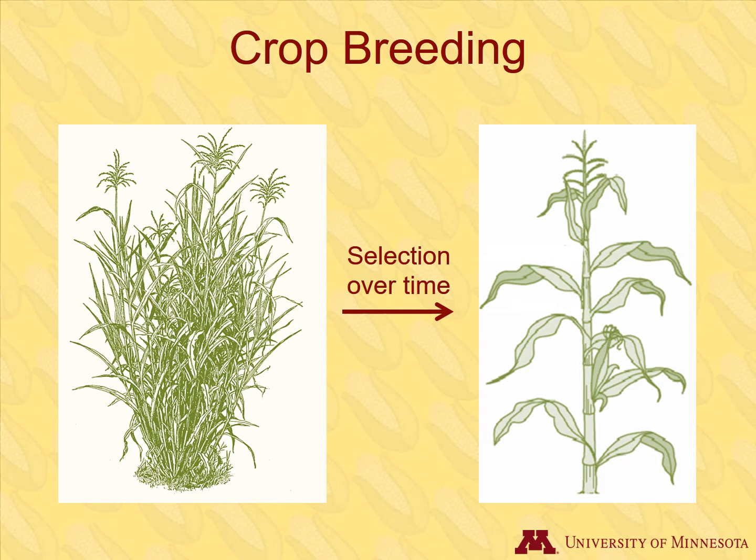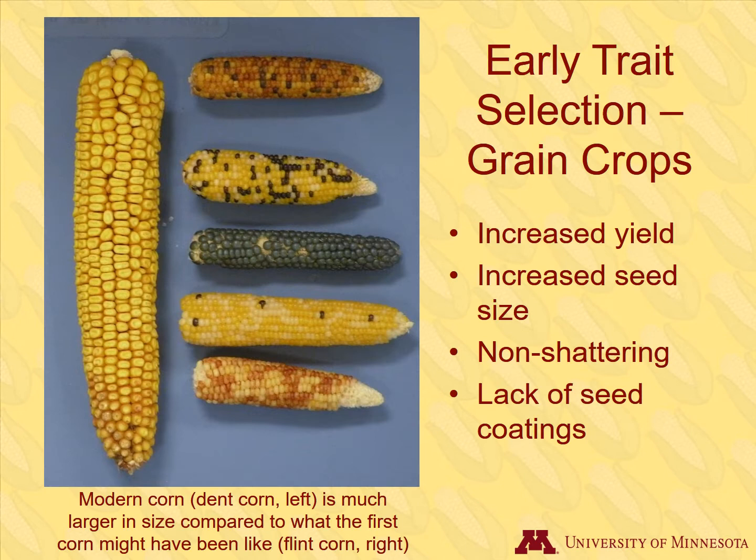Plants with traits that were beneficial to early farmers were chosen and propagated, while plants with traits that were not valuable were not chosen. Over a long period of time with selection by people, Teosinte came to more closely resemble modern corn.